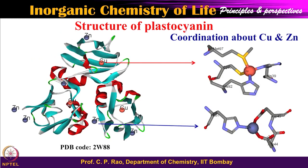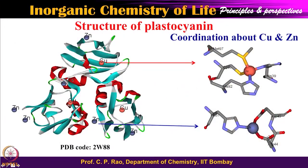Another example is the enzyme plastocyanin, whose function is electron transfer. It has two types of metal centers — one is the copper center and the other is the zinc center. Looking at the copper center, you can see the copper is surrounded by 4 ligands: one is cysteine sulfur, and another is a modified cysteine called methionine — its sulfur is a thioether. Then there is a cysteinyl sulfur which is S minus, and a histidine.